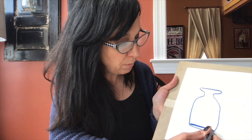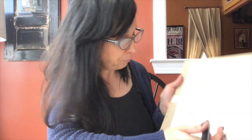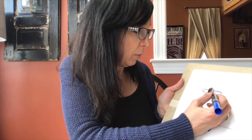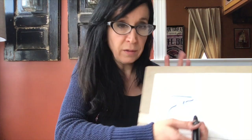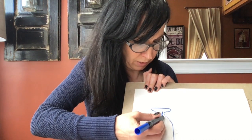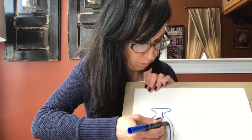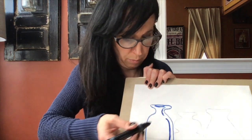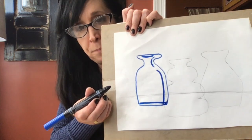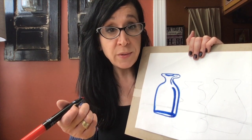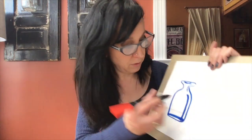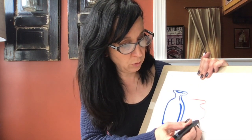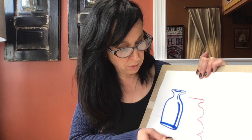I'm going to add just a little bit of an extra line here that will help follow the shape of my object. Maybe I'll show a little opening there as well. Now I'm going to use another color to do the same thing to my center glass bottle.